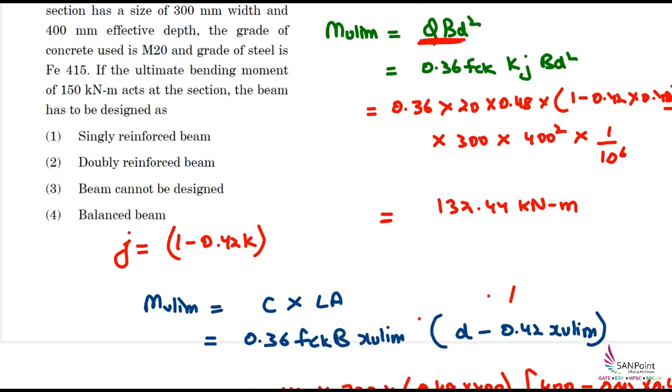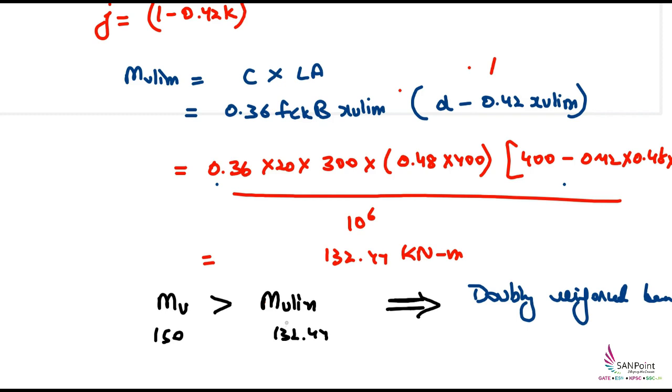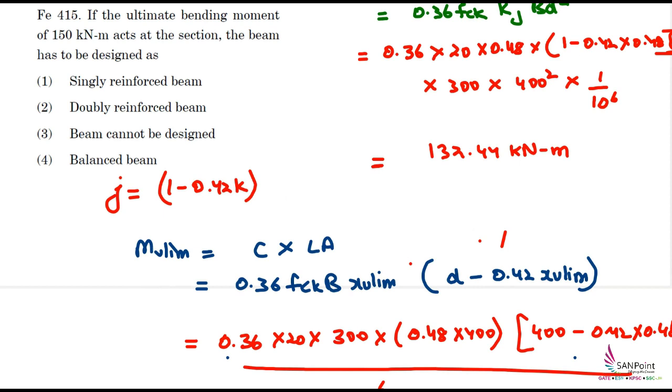Now I can compare the given MU value. MU was 150 and MU limiting is 132.44. Here we observe that the given ultimate bending moment is greater than MU limiting. Clearly MU is greater. So in such a scenario, the design will be done for doubly reinforced beam. Suppose the MU limiting value exceeded 150, then the answer would be singly reinforced. If it equals 150, we design a balanced section. The correct answer is doubly reinforced beam, option 2.